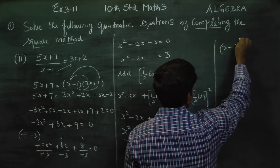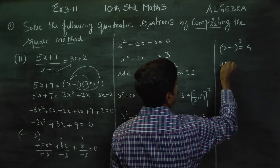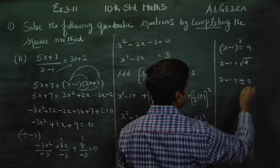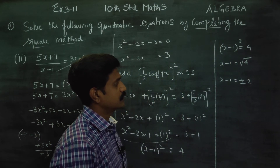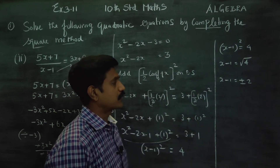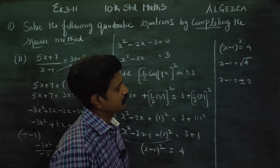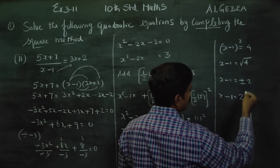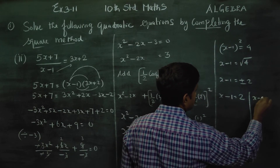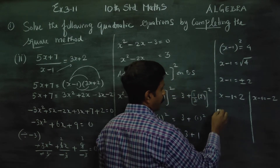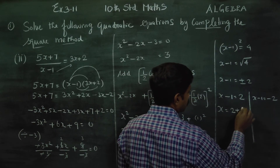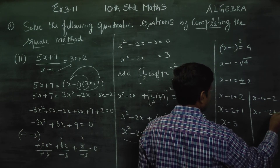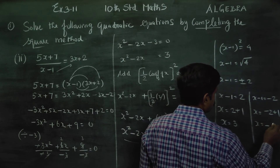So (x minus 1) whole square is equal to 4. Taking the square root of both sides: square root of 4 is plus or minus 2. Therefore x minus 1 equals plus 2, giving x equals 2 plus 1, so x equals 3. Also, x minus 1 equals minus 2, giving x equals minus 2 plus 1, so x equals minus 1.